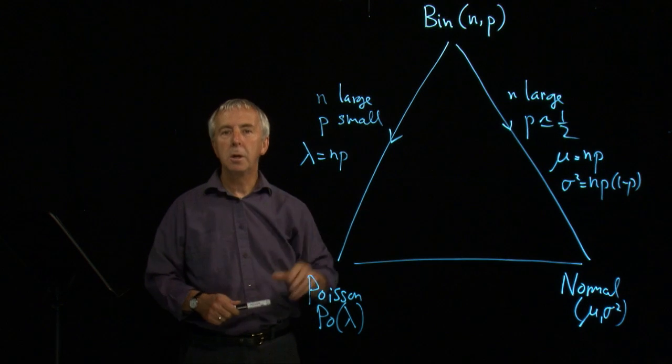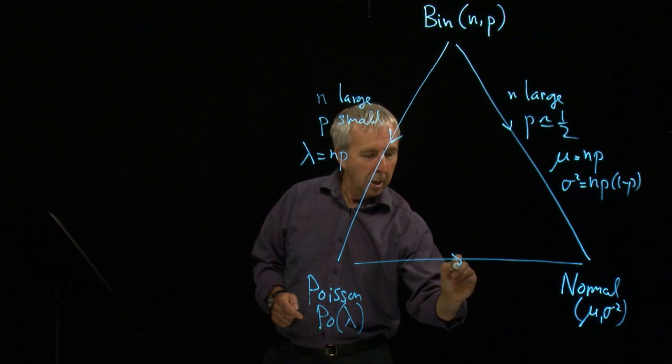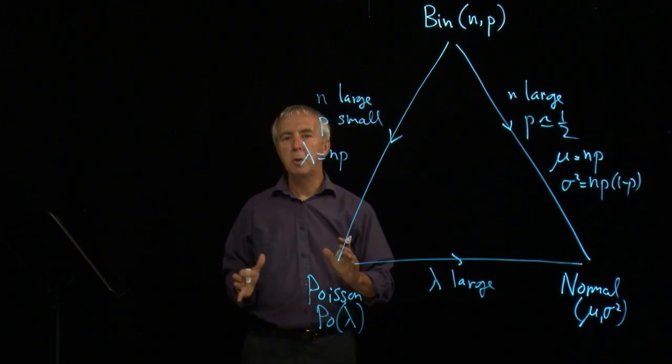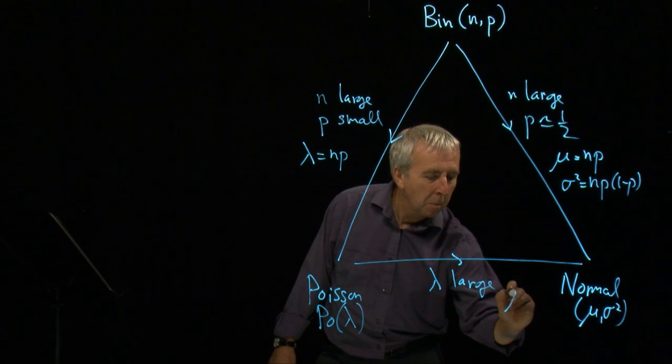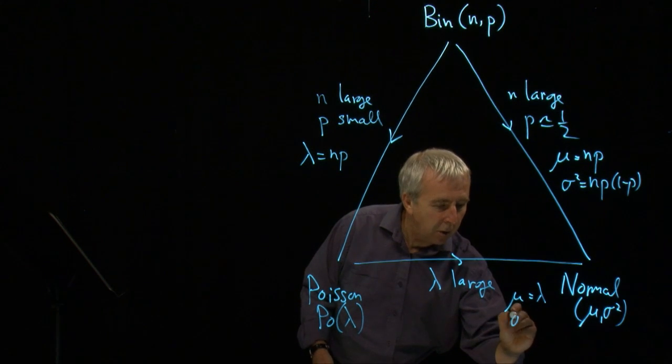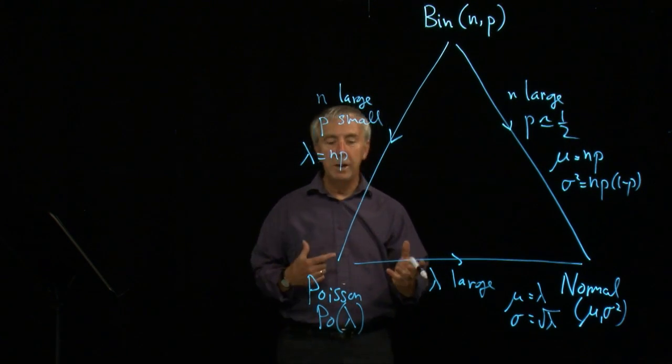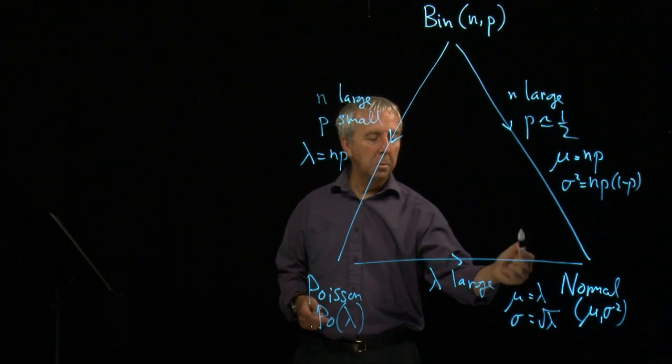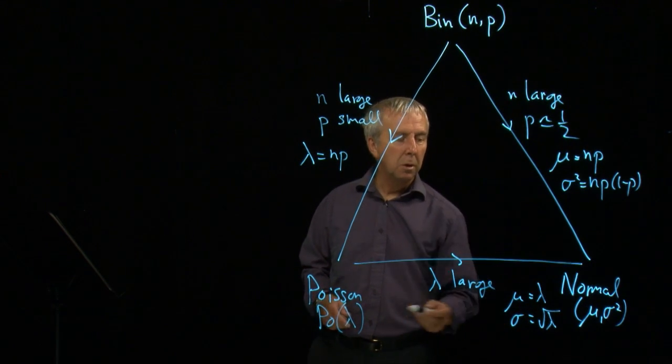And then the third side of the triangle is when we have a Poisson distribution. If the mean of that is large, then we can approximate the Poisson by the normal and we will find the mean by taking the same mean as the Poisson. And the standard deviation is the square root of that mean. Because for the Poisson, the mean and the variance are the same. So if we have a large mean, we can find the standard deviation for the normal, and that gives us the parameters we want.